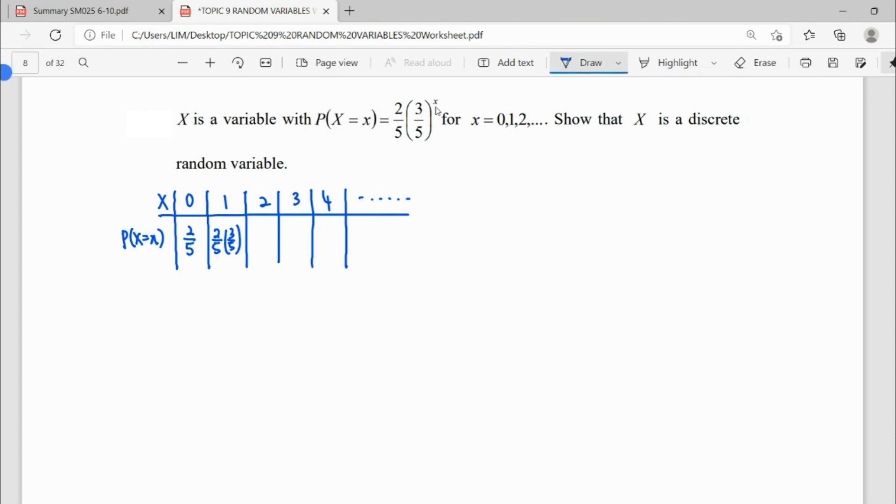When X is 2, it will be power of 2. So we can see the pattern—this is power of 2. When it is 3, it becomes power of 3; when it is 4, it becomes power of 4.